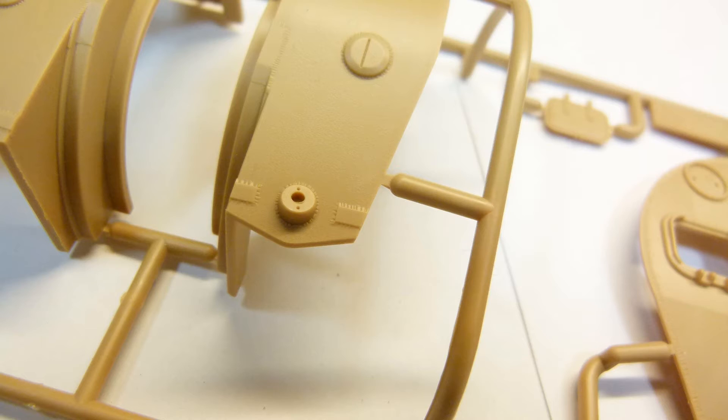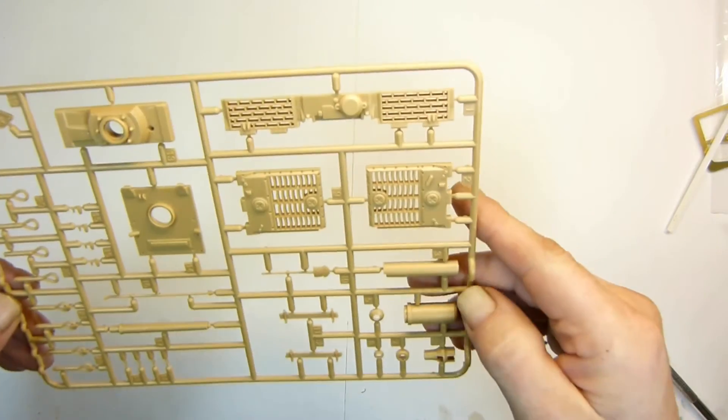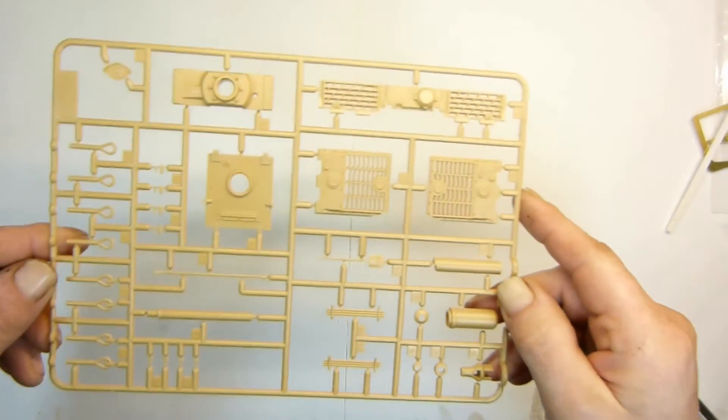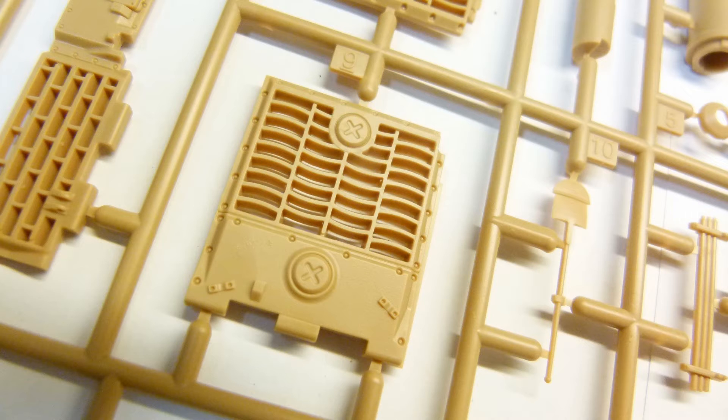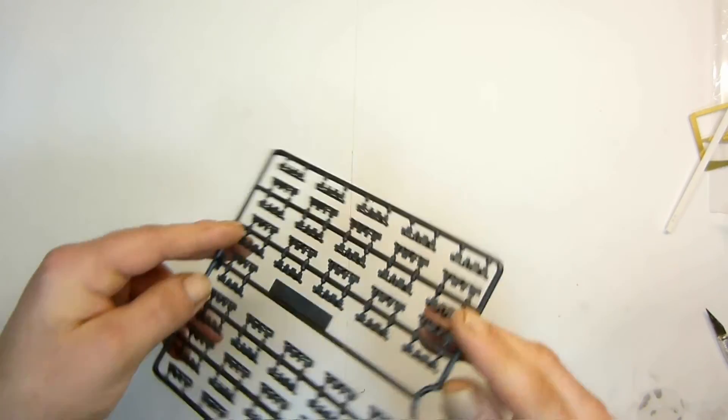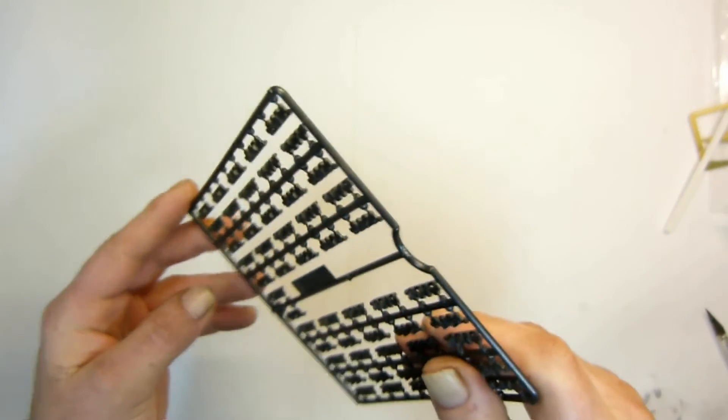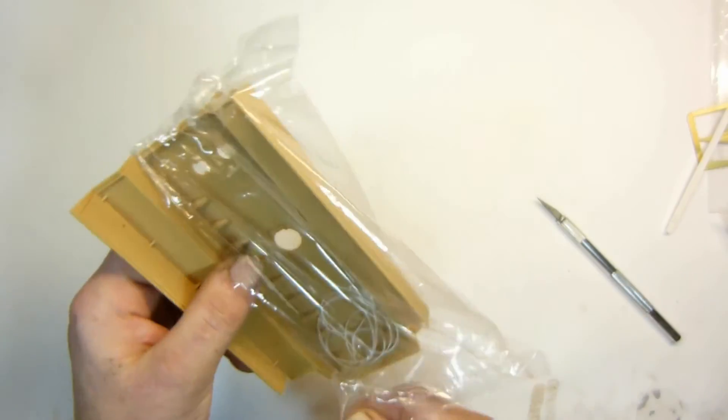Again on the newer parts, the weld detail is exactly the same as the previous parts which is a shame, they could have reworked it but there you go. They give you individual tracks and they're nicely detailed apart from the guide horn which is solid, but apart from that they're nice tracks.